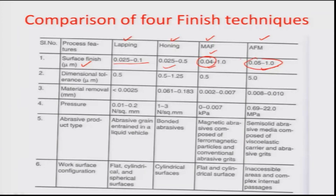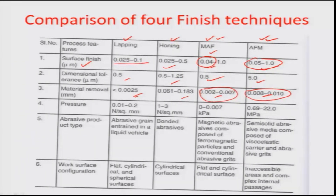The domain of these two new non-traditional processes is quite large. If you look at dimensional tolerances, the MAF process is comparable with lapping and honing, whereas AFM may have a slightly higher dimensional tolerance. Material removal in these processes compared to lapping or honing is quite comparable, and in fact for MAF versus lapping, MAF is better — you have a higher yield possibility because of the higher material removal rate in MAF and AFM processes compared to conventional lapping and honing.